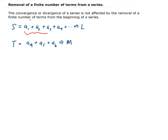I want to illustrate this with an example. Let's say we want to find the summation from n equals 4 to infinity of (1/2)^n. What we can do is find the summation going from 0 to infinity, then calculate the summation going from 0 to 3, and subtract those out. That will give us the summation from 4 to infinity.